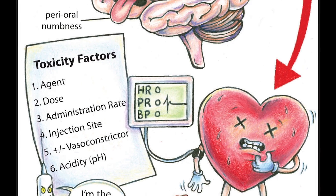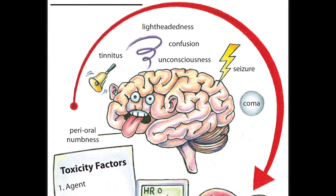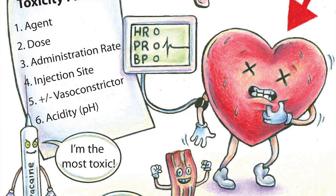As for the signs and symptoms of local anesthetic toxicity, they tend to present in order of severity from most mild to most severe. The patient might initially complain of perioral numbness or paresthesia and generalized tinnitus. They might feel lightheaded or dizzy, become confused, become unconscious, develop seizures, progress into a coma, and then exhibit cardiac collapse.